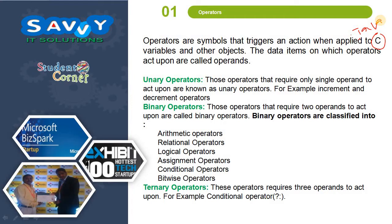Those operators that require two operands to act upon are called binary operators — they perform operations between two operands. Examples include arithmetic operators, relational operators, logical operators, assignment operators, conditional operators, and bitwise operators.